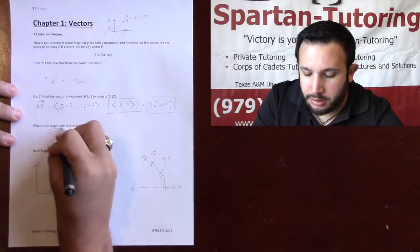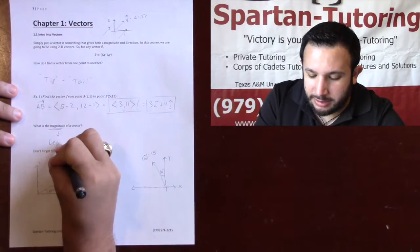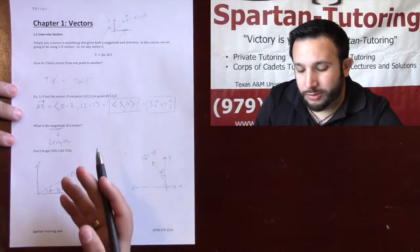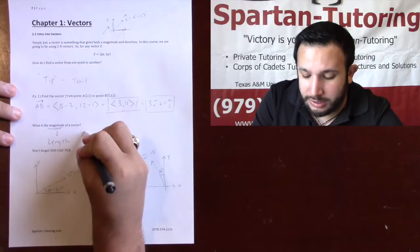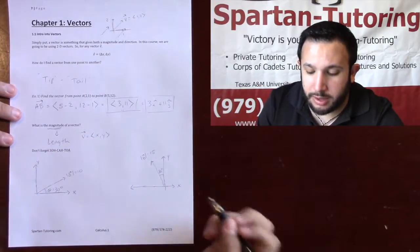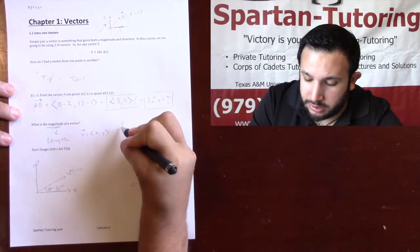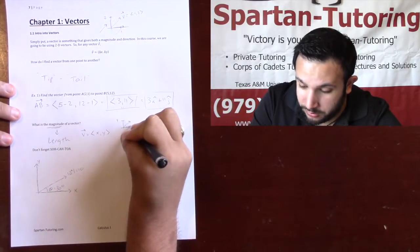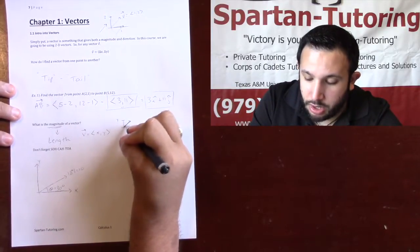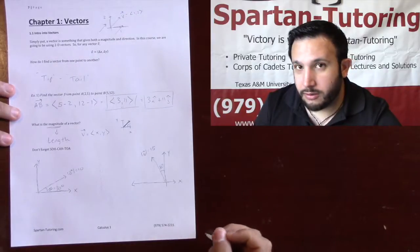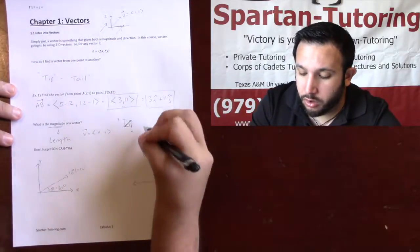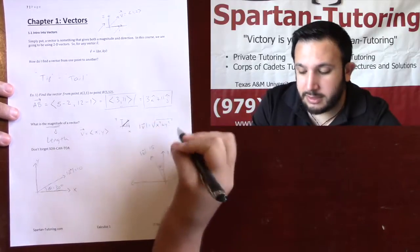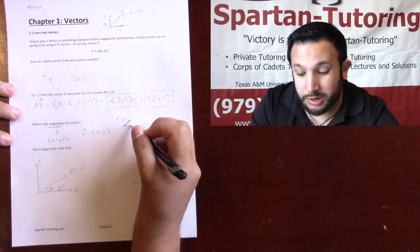What is the magnitude of a vector? The magnitude is the length of the vector. If I have some vector V = ⟨x, y⟩, it has moved some distance in X and some distance in Y, which creates a right triangle. So the magnitude of V is just the square root of x² + y², which comes directly from the Pythagorean theorem.